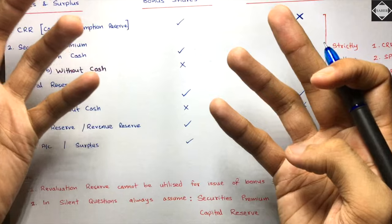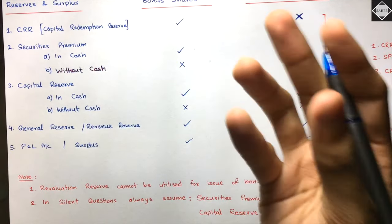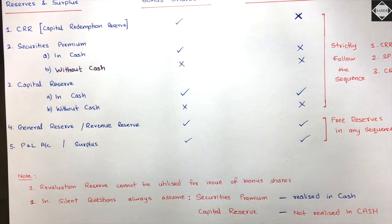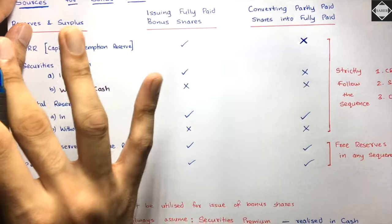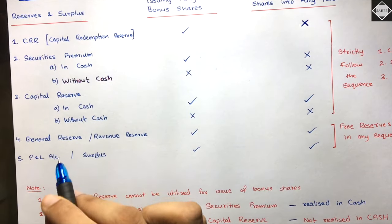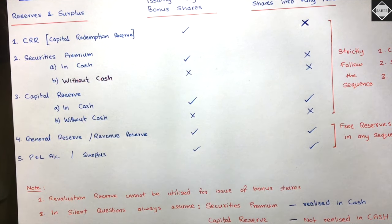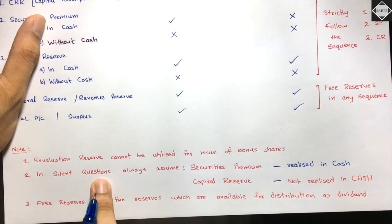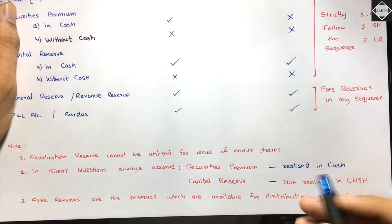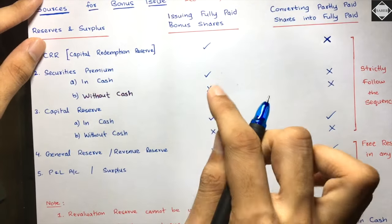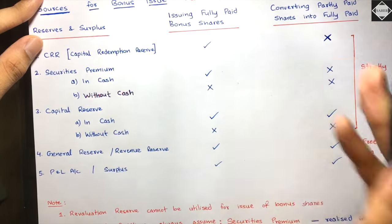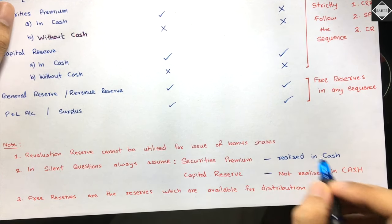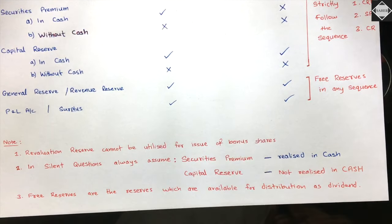Important notes: First, revaluation reserve cannot be utilized for issue of bonus shares, because it allows manipulation - a company could revalue land from ₹5 lakh to ₹1 crore, creating ₹95 lakh revaluation reserve without any actual cash. They haven't sold the land, there is no cash - it would be complete manipulation, so it is prohibited under the Companies Act.